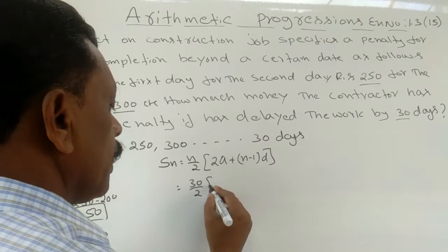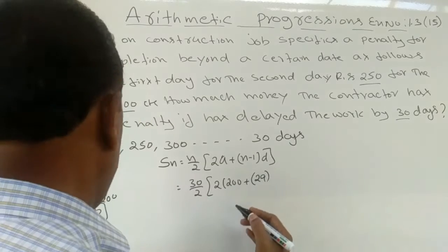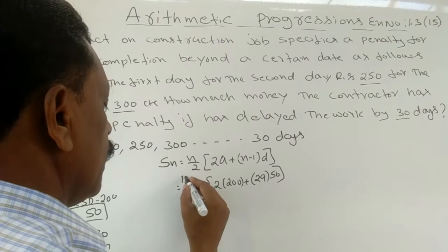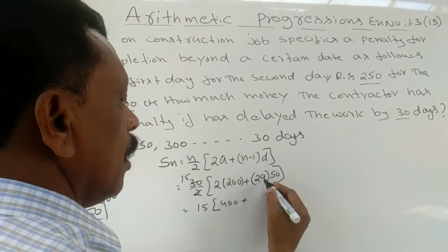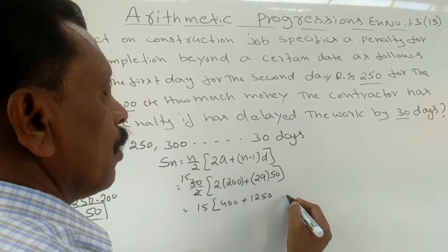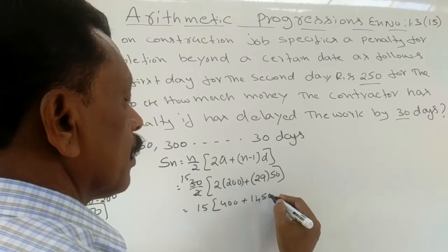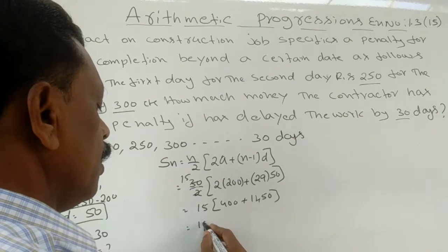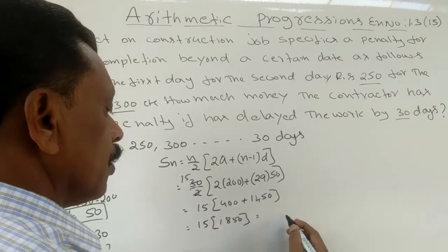Substituting the values: Sn = 30/2 × (2×200 + 29×50) = 15 × (400 + 1450) = 15 × 1850.